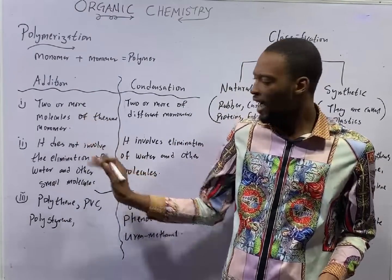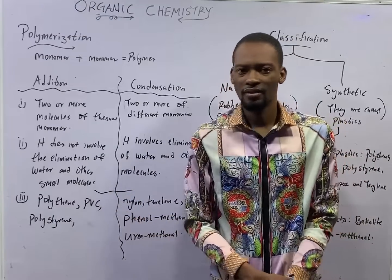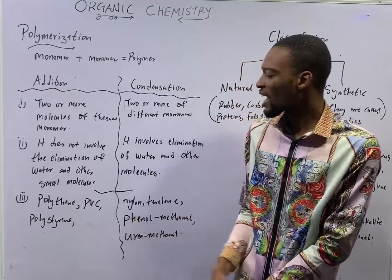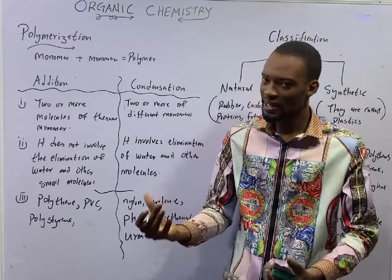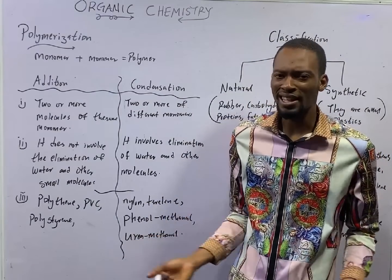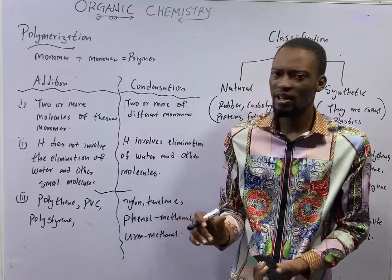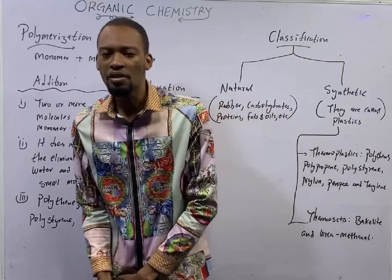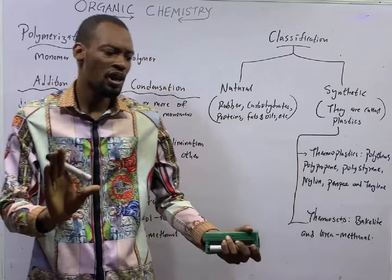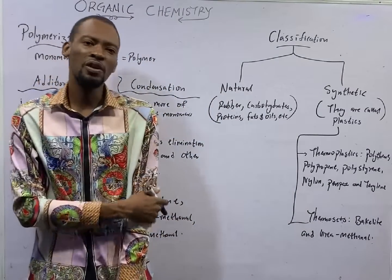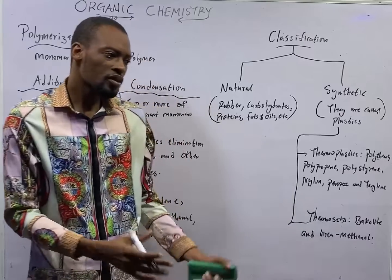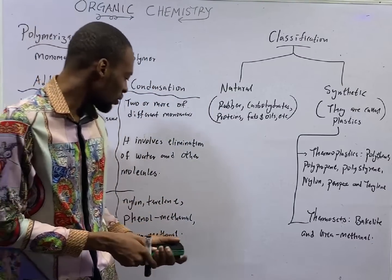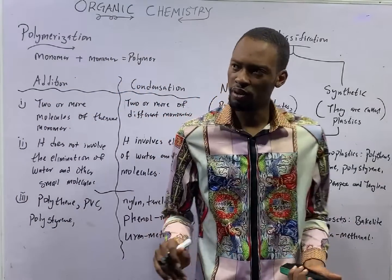Examples of addition polymers are polythene, PVC — which is polyvinyl chloride — and polystyrene. These are the hot cake examples of addition polymers. Examples of condensation polymers are urea methanal, phenol methanal, nylon, and terylene — they are condensation polymers.